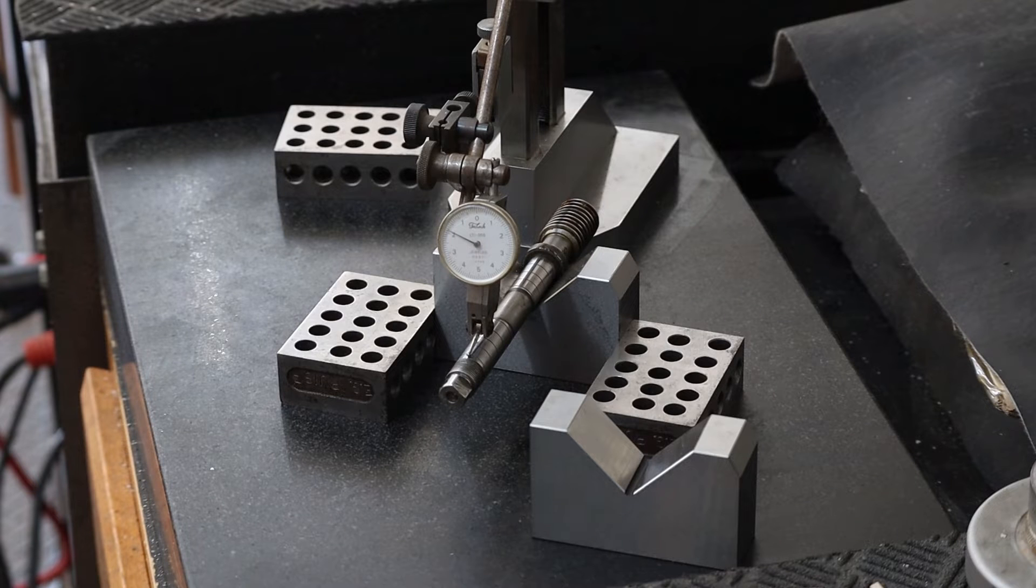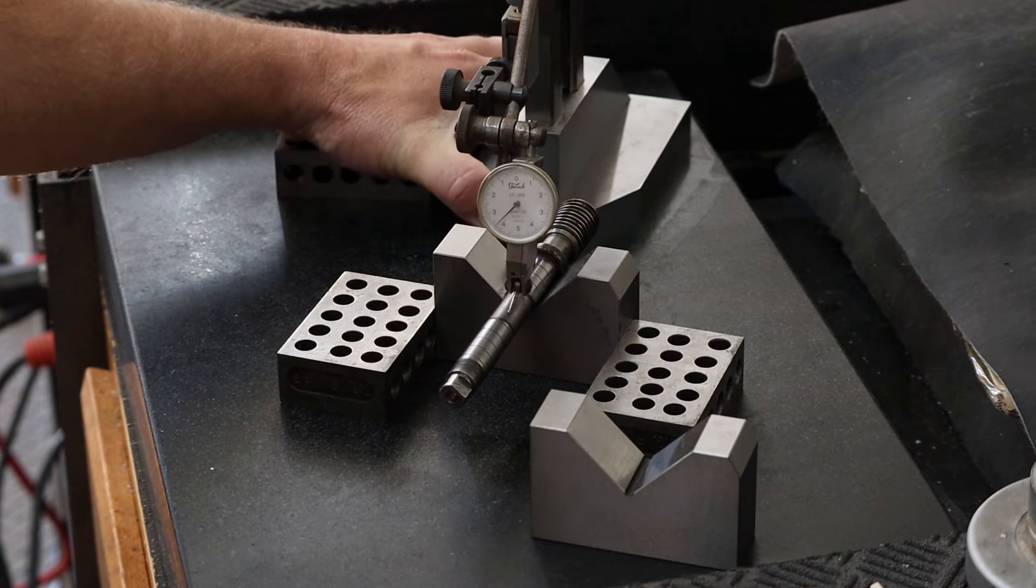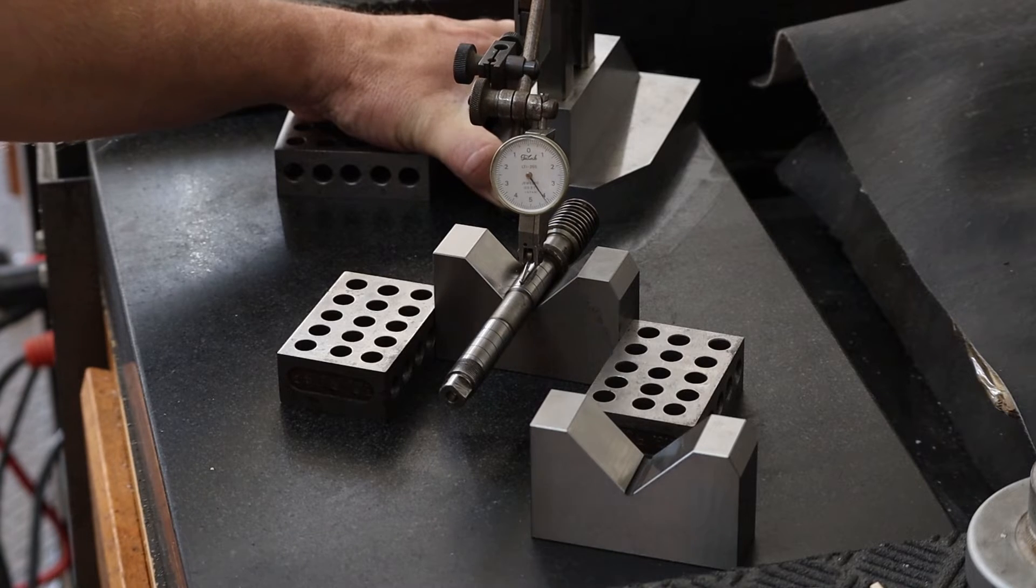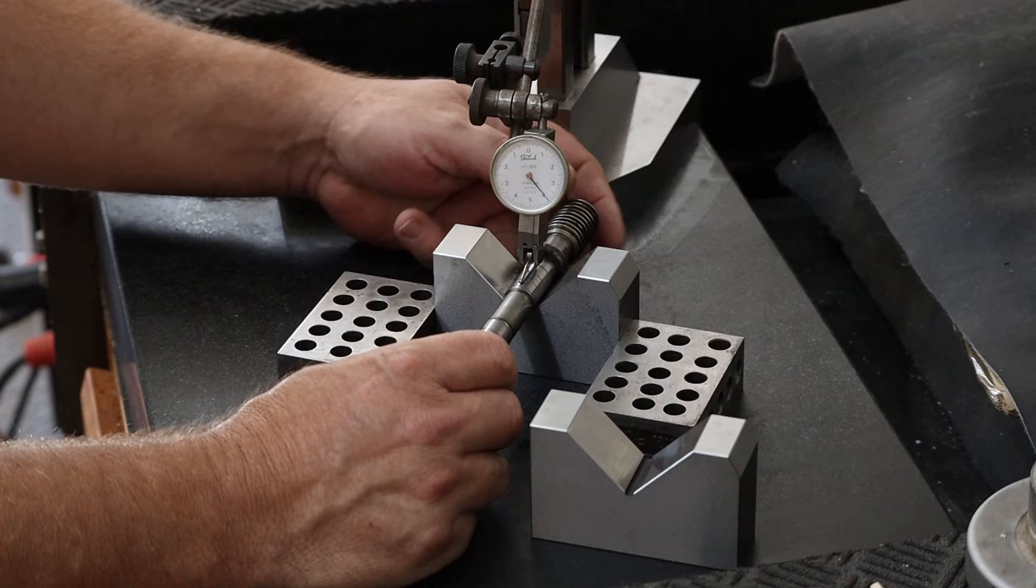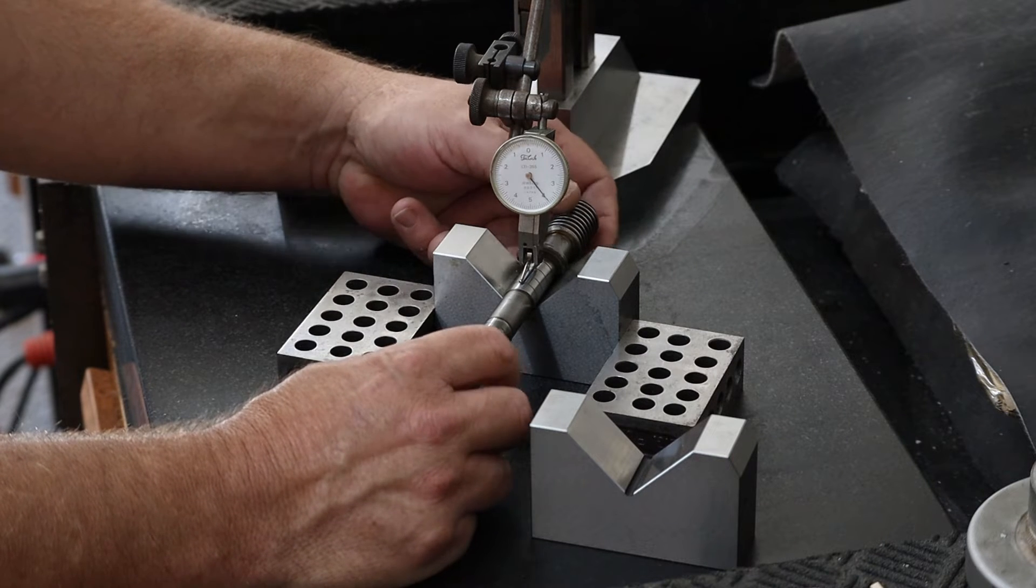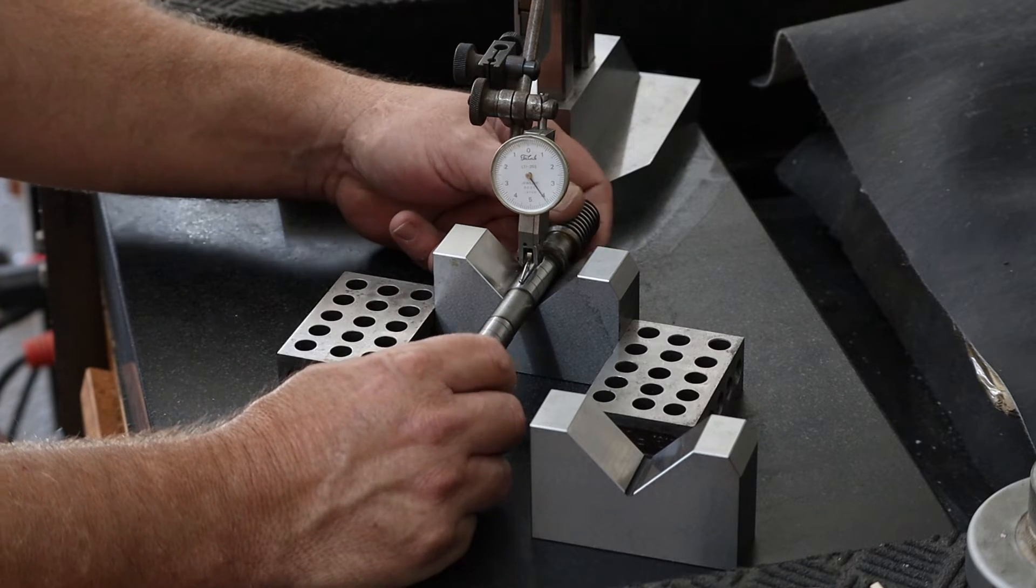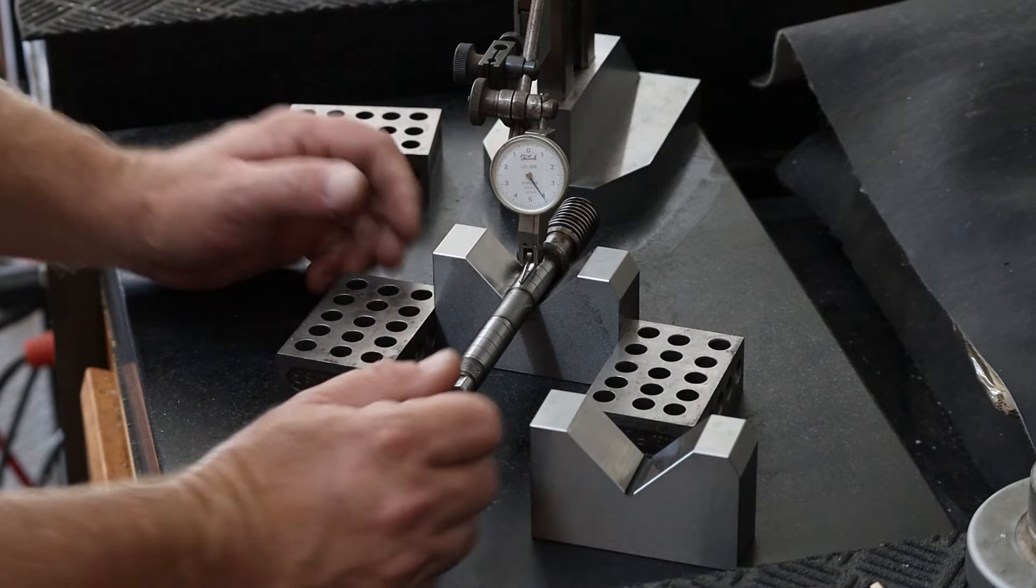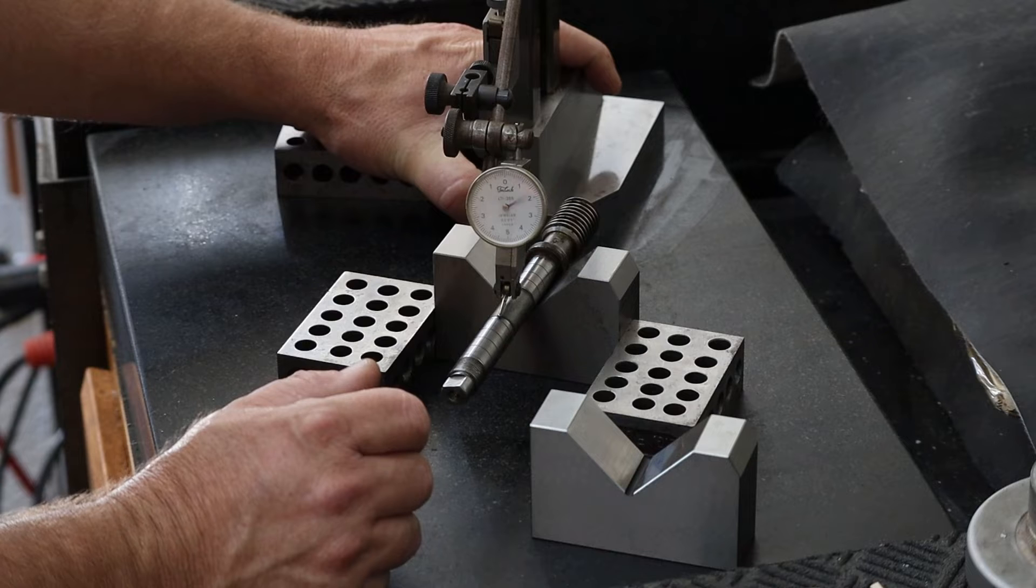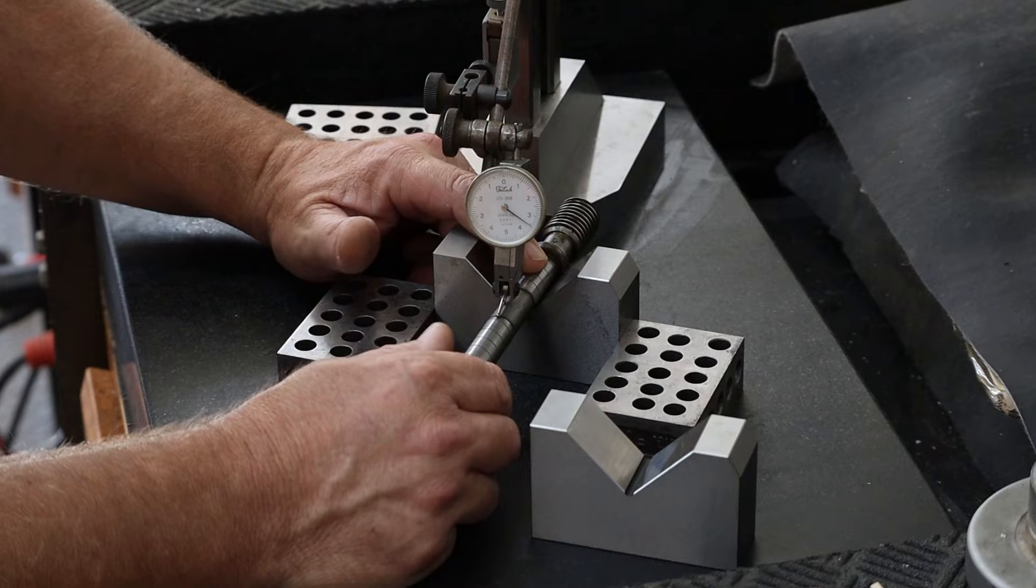We'll straighten the shaft first. Good idea as to where it's bent mostly at. We'll make sure this is round here, that's pretty straight there, and then if I come over here we'll get an idea as to where it's mostly bent.